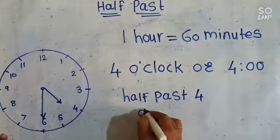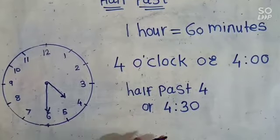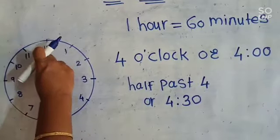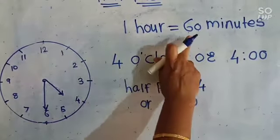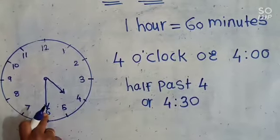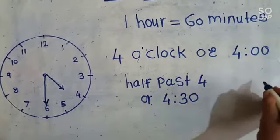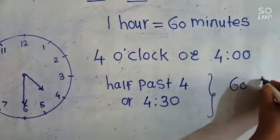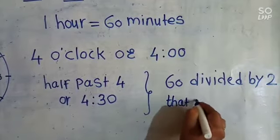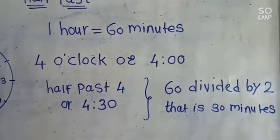Or written as 4:30. Why 30? You know, from 12, when the minute hand moves from 12 and comes back on 12 again, that time it becomes 60 minutes. Now the minute hand has moved to 6, so that is half an hour. Half an hour is equal to 60 divided by 2, that is 30 minutes. So 30 minutes is called half an hour.